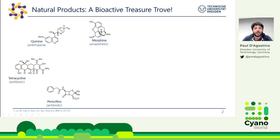Natural products are small molecules that are made by a variety of different organisms. These are probably some natural products that you've all seen — for example, morphine, penicillins, and tetracycline.